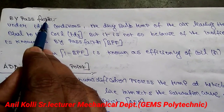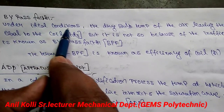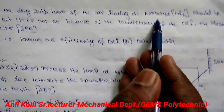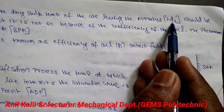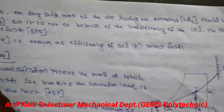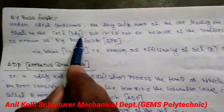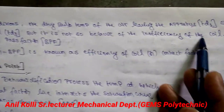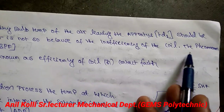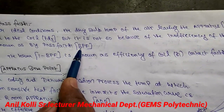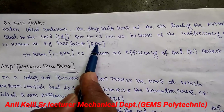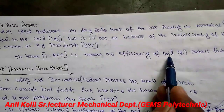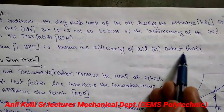First one is bypass factor. Under ideal conditions, the dry bulb temperature of air leaving the apparatus (T2) should be equal to the coil temperature (T3), but it is not so because of the inefficiency of the coil. This phenomenon is known as bypass factor, briefly written as BPF. The term 1 minus BPF is known as the efficiency of the coil.